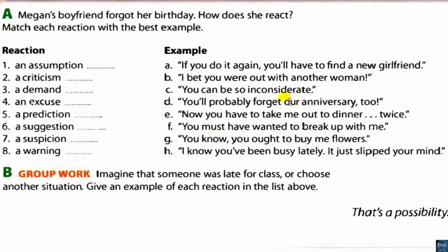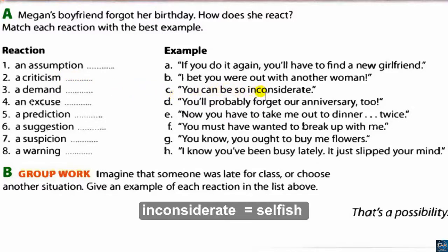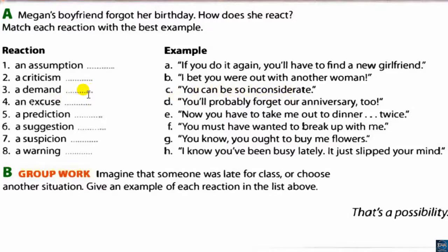A criticism means to point out the bad things about something. Number three — a demand: E. 'Now you have to take me out to dinner twice.' A demand means to ask for something strongly. Number four — an excuse: H. 'I know you've been busy lately — it just slipped your mind.'